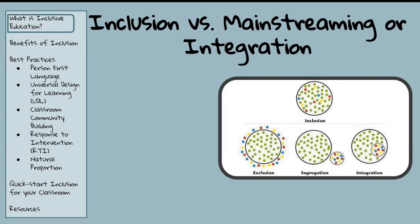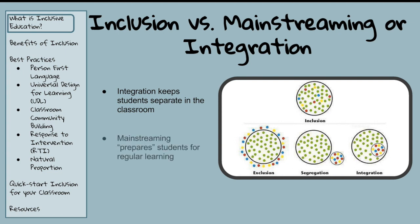Is there a difference between inclusion and mainstreaming or integration? It's important to note that inclusion is not the same thing as mainstreaming or integration. Integration and mainstreaming tend to be concerned principally with disability and special educational needs, and implied learners changing or becoming ready for or deserving of accommodations. By contrast, inclusion is about the child's rights to participate and the school's duty to accept the child. Inclusion rejects the use of special schools or classrooms to separate students with disabilities from students without disabilities.